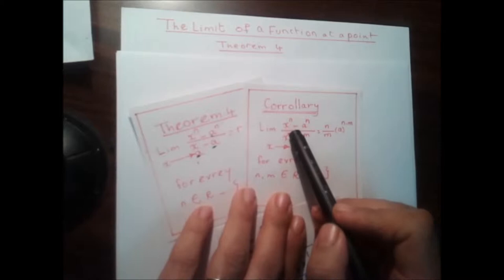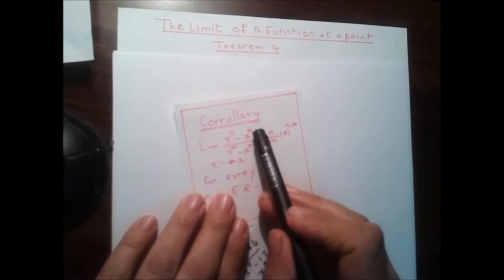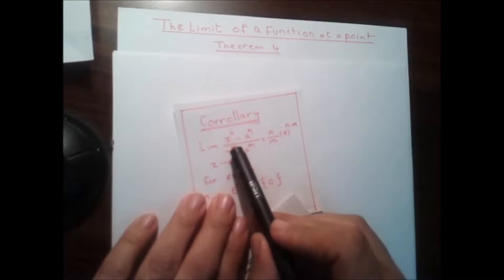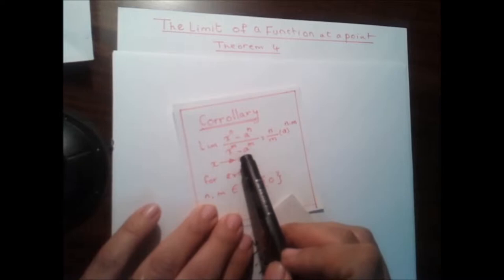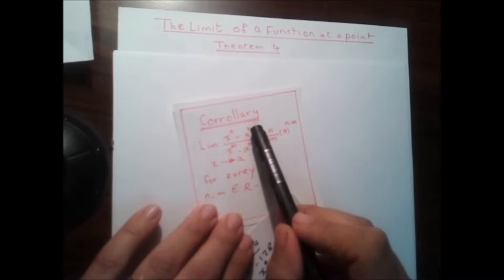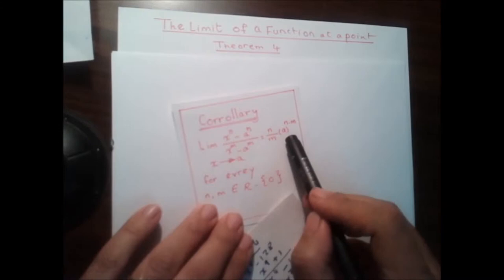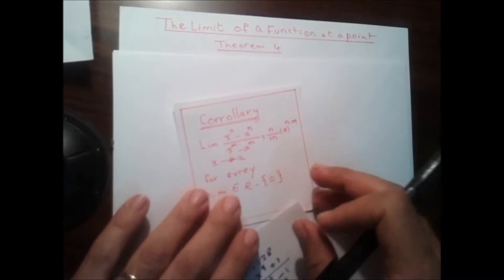For the corollary, we're going to add exponents to the terms of the denominator. So the limit as x tends to a of (x^n minus a^n) over (x^m minus a^m), where n is the power of the numerator and m is the power of the denominator, with the same a up and down. This is equal to n over m — the power of the numerator over the power of the denominator — times a to the power of n minus m, for each n and m belonging to ℝ minus {0}.